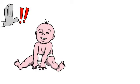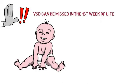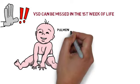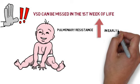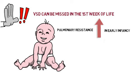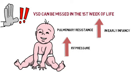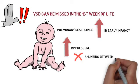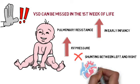It is important to note that a ventricular septal defect can be missed in the first week of life. This is because pulmonary resistance in early infant life would still be high, just like in the fetal circulation. Therefore, right ventricular pressure is also high, so there is no significant pressure difference between the left and right ventricle, resulting in only a minimal shunt.